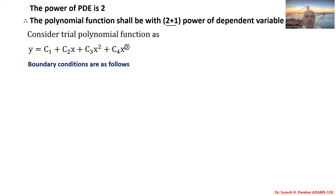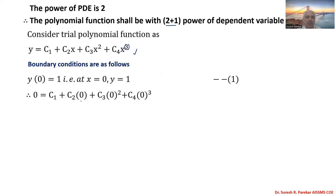The first boundary condition is y(0) = 1, meaning at x = 0, y = 1. Substituting x = 0 into the polynomial: c2·0 + c3·0² + c4·0³ all vanish, and the remaining term equals 1. From this we get c1 = 1.